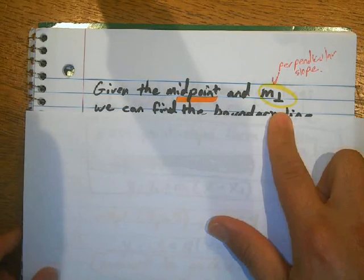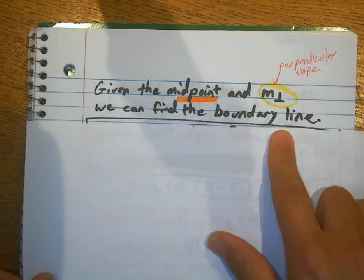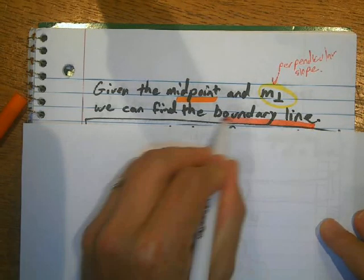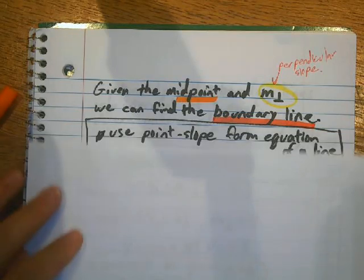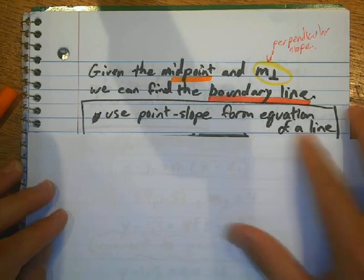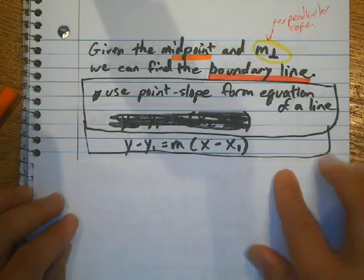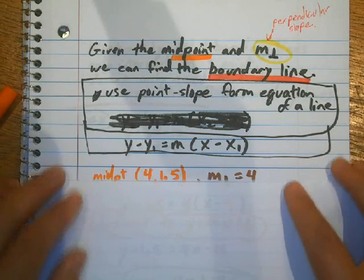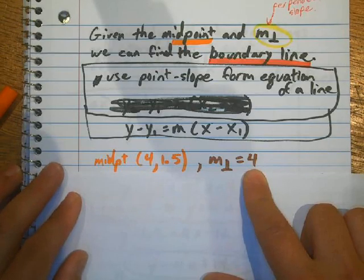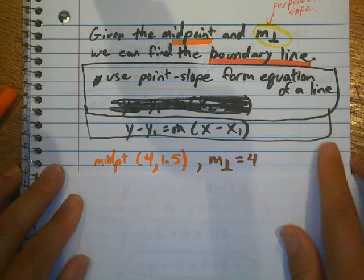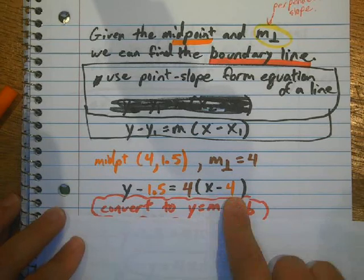Okay, so the midpoint and the perpendicular slope is going to give me the boundary line. Okay, those lines that were red. Okay, now, I'm going to use the point slope equation of the line in order to put in my perpendicular slope and the midpoint. So, that perpendicular slope was 4. The midpoint we just used was 4 comma 1.5. I put those into the point slope form equation.